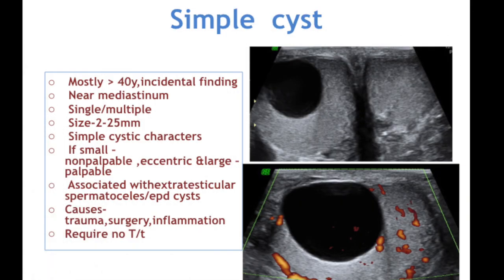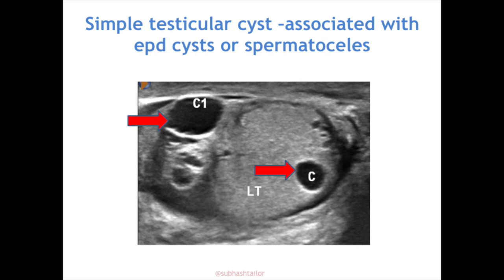Simple cysts are seen mostly in elderly males and most of the time are an incidental finding. They are seen near the mediastinum, can be single or multiple. Size varies between 2 to 25 millimeters, and these cysts show all features of simple cysts: imperceptible wall, clear or echo-free interior, distal echo-enhancement, with no internal complexities like internal echoes, septi, or solid nodule. Small cysts are non-palpable; if eccentric or peripherally located they are palpable. Causes include trauma, surgical intervention, and post-inflammatory changes; these cysts require no treatment.